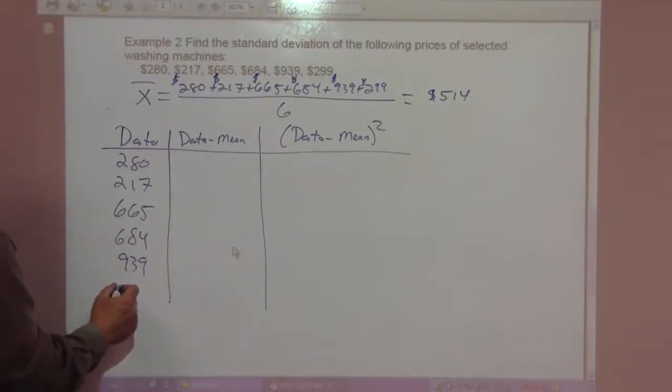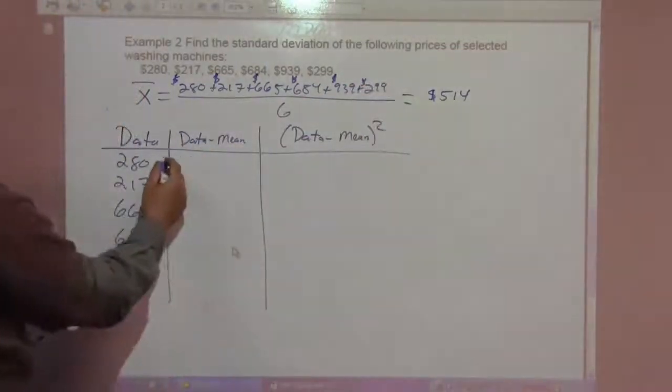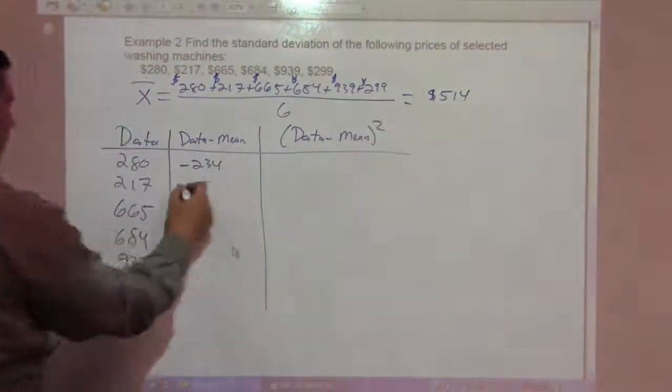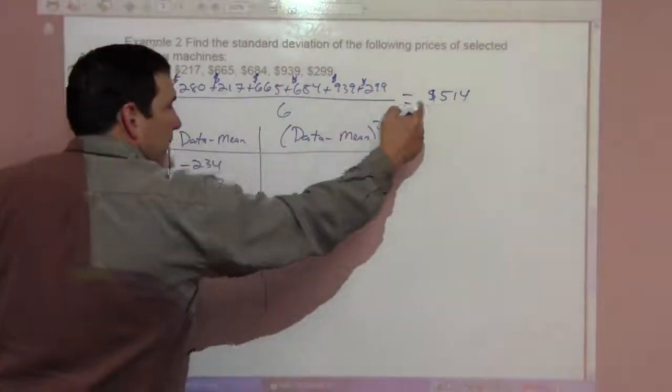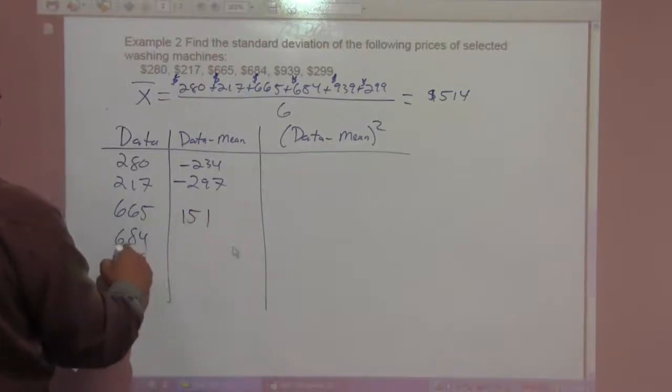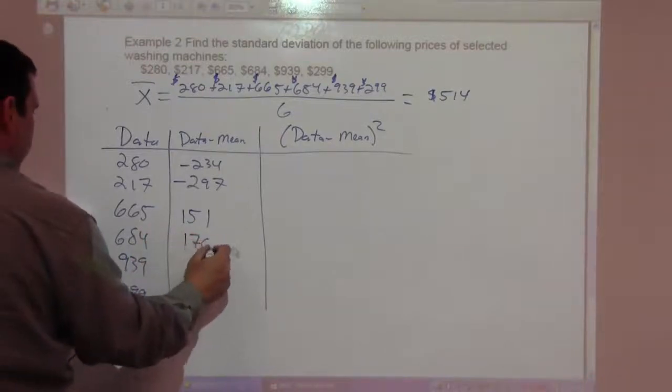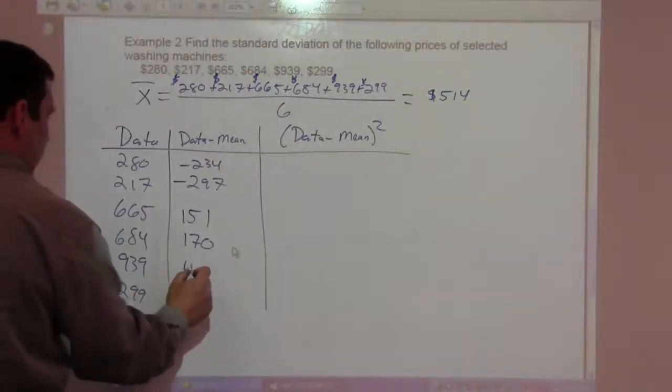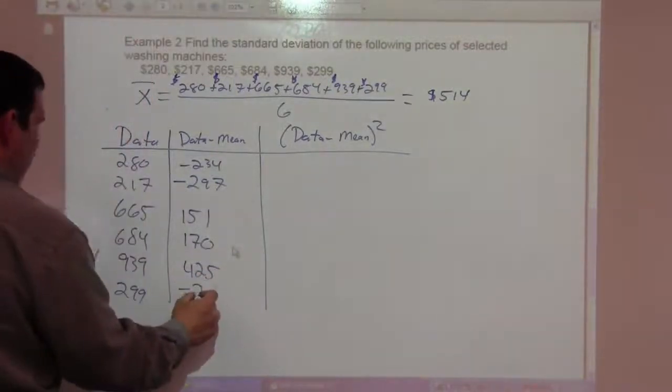When we do data minus mean, it's 280 minus 514 is negative 234. 217 minus 514 is negative 297. 665 minus 514 is 151. 684 minus 514 is 170. 939 minus 514 is 425. And 299 minus 514 is negative 215.